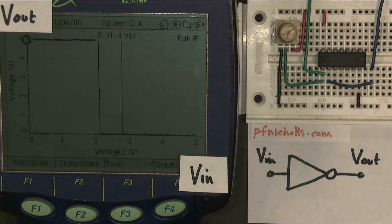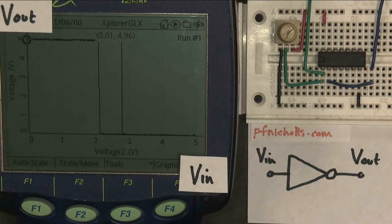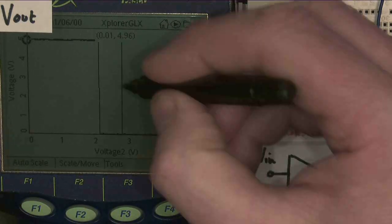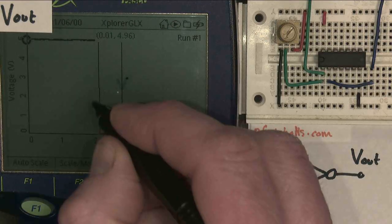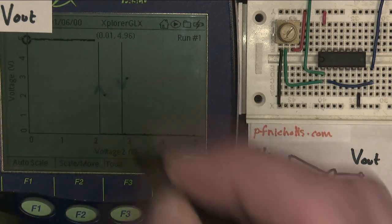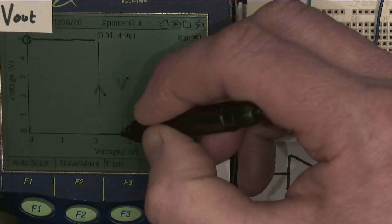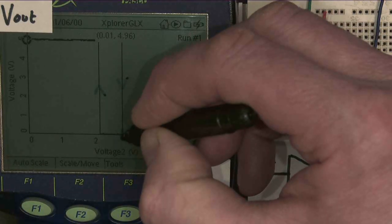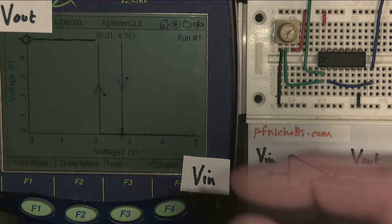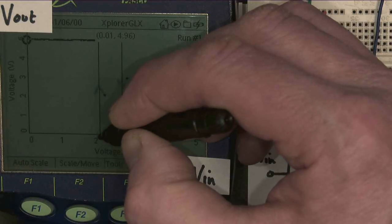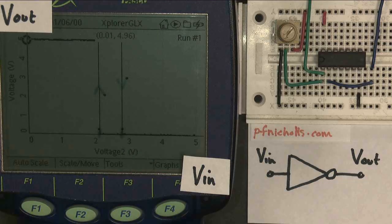If we annotate the screen, the output went down in this direction, but it went up at that point. It changes from logic 1 to logic 0 at about 2.8 volts, but it changes from logic 0 back to logic 1 at an input of 2.1 volts.